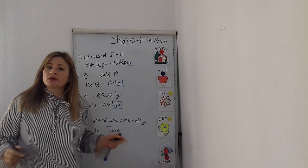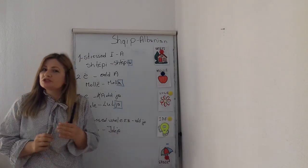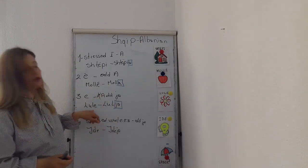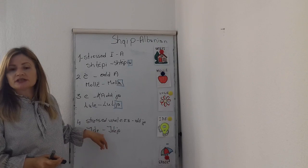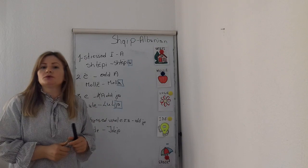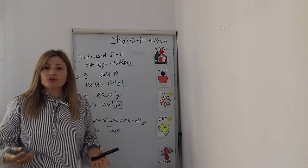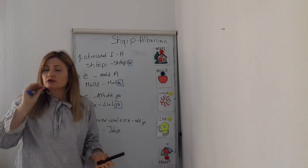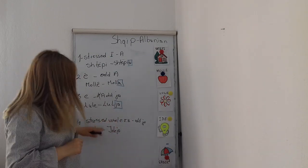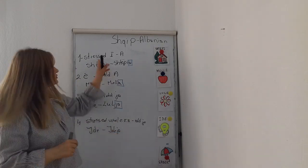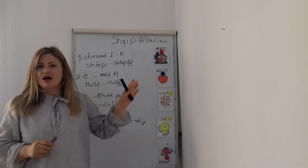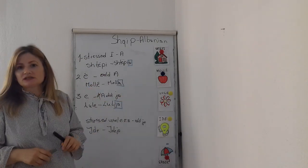One more thing: if you cannot distinguish whether the vowel is stressed or not, don't worry — because when you pronounce it, it actually sounds the same. For example, 'Lule,' 'Ide,' or 'Shtëpi' — they always sound like JA at the end. Only rule two doesn't produce a JA sound.